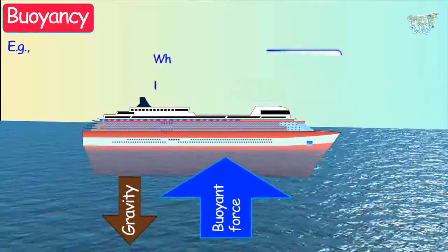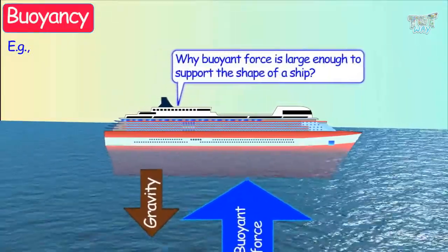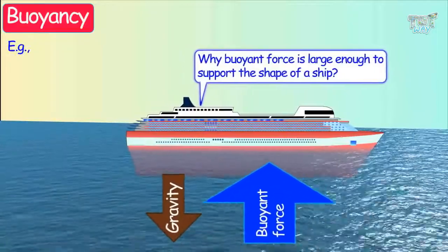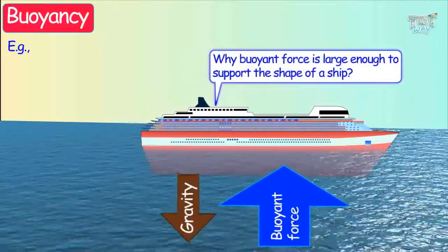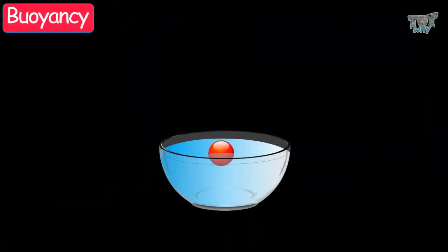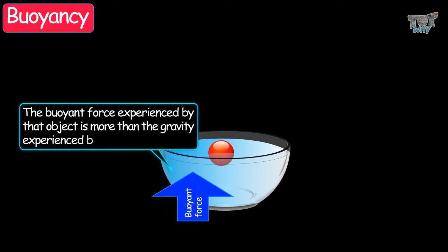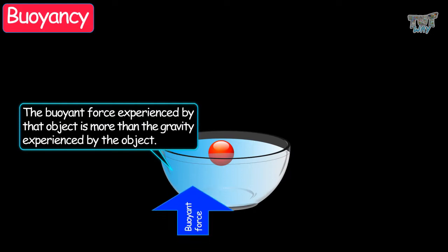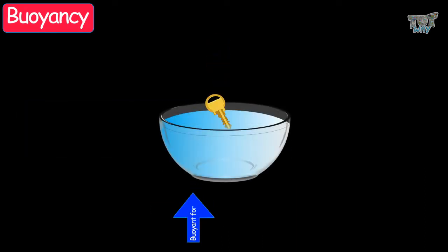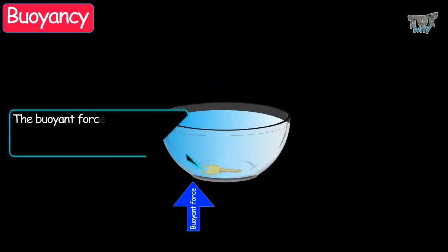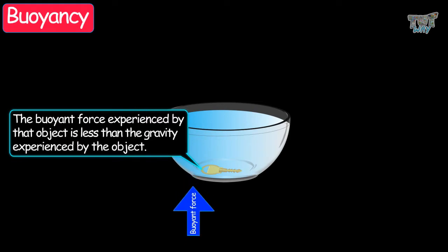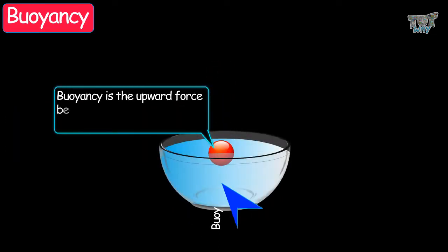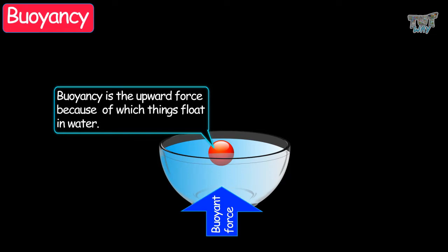Whenever we see an object floating, it means that the buoyant force experienced by that object is more than the gravity experienced by the object. And whenever an object sinks, it means that the buoyant force experienced by the object is less than the gravity experienced by the object. So buoyancy is the upward force because of which things float in water.